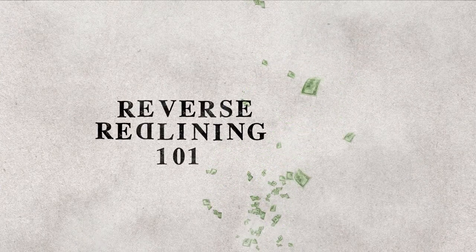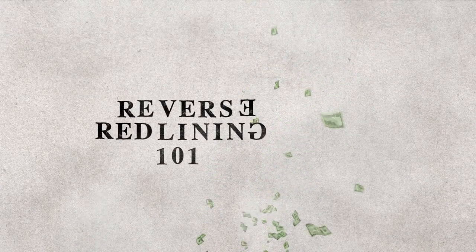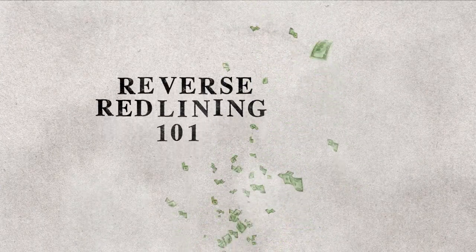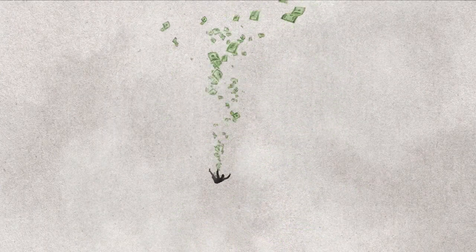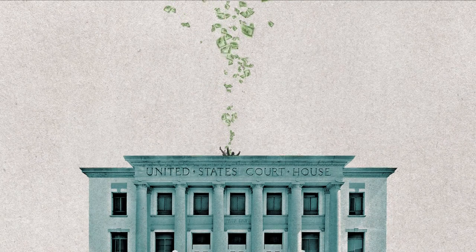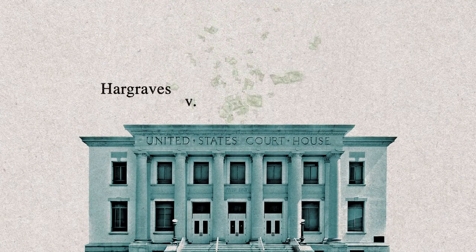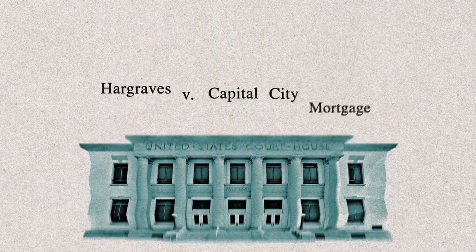So what does this look like in practice? Let's explain. A defining moment in identifying reverse redlining was the Hargraves v. Capital City Mortgage case.